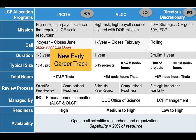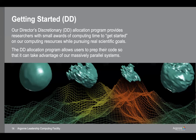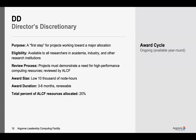I'm also going to talk about a new track — a new component of the INCITE program this year — our Early Career track. Working my way up: the discretionary program is really the first step for most projects looking at time at the ALCF. It's available to anyone; the primary thing is you just need to demonstrate some need for access to these high-performance systems. The ALCF reviews these on a very regular basis, and they're normally three to six months in duration and a small number of hours.